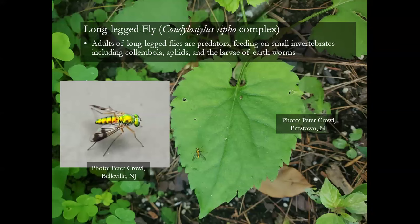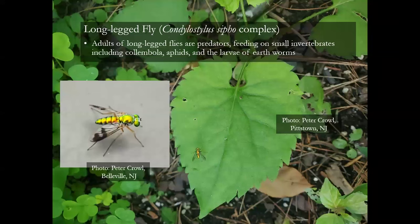Long-legged flies — I suspect most of you have never heard of them. They're actually, first of all, beautiful little things. This particular one almost glows when you see it in person. Peter Crowell took pictures both in Pittstown and in Belleville — one sitting on a seat, the other in a more natural setting. Long-legged flies are wonderful predators on really small invertebrates: collembolans, which are tiny, tiny things; aphids; and the larvae of earthworms, of all things.